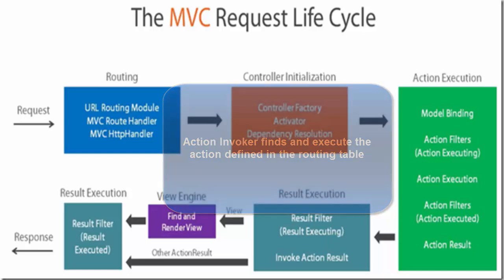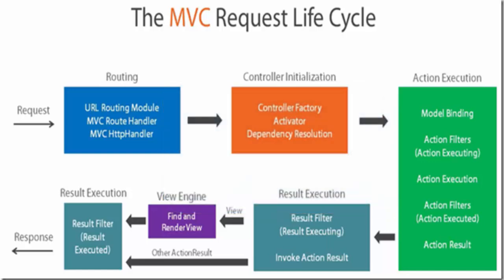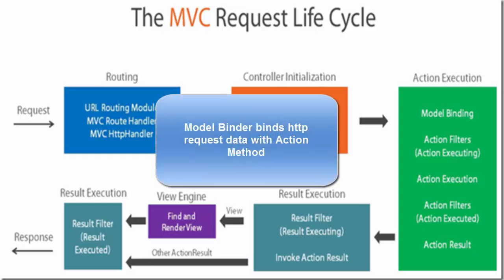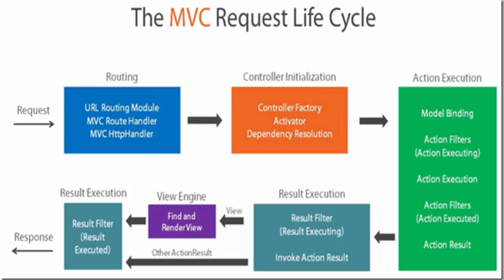Before the action method is called, model binding takes place, which helps map data from HTTP requests to the action method parameters. After model binding, action filters are executed — they run two times: before the action is executed (OnActionExecuting) and after the action has been executed (OnActionExecuted). Once the action method has finished executing, the next step is result execution.